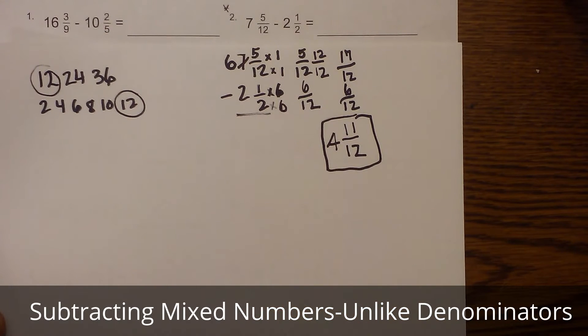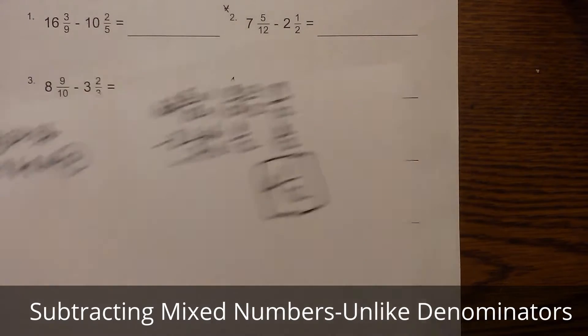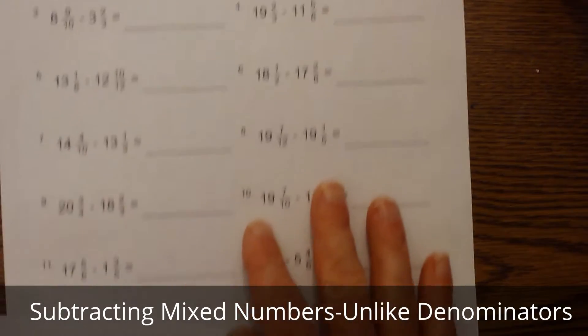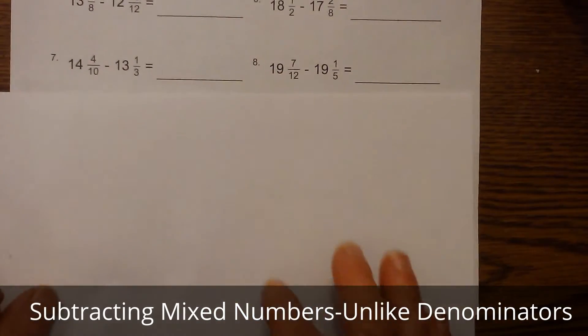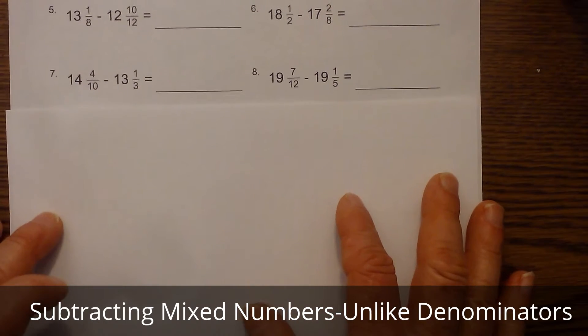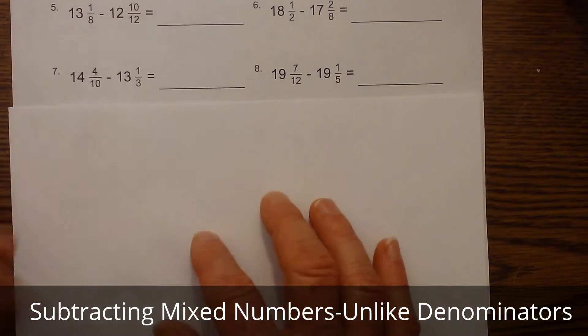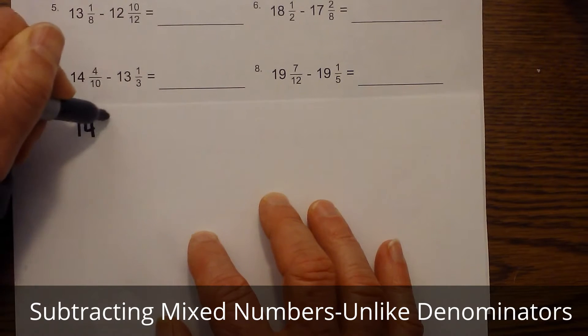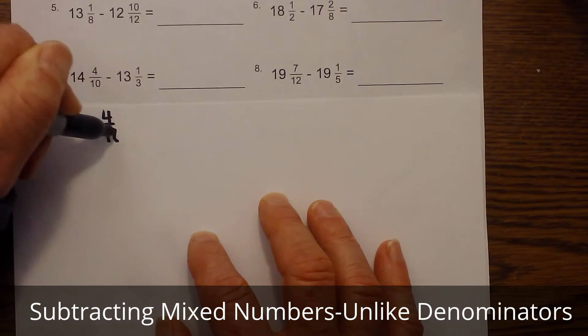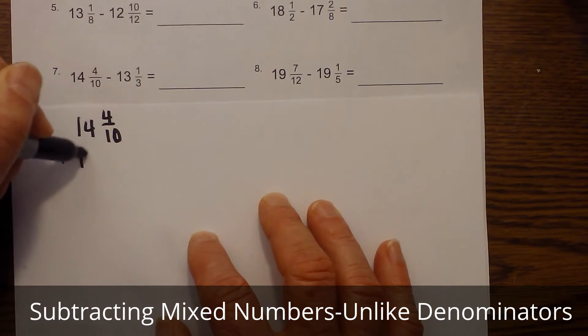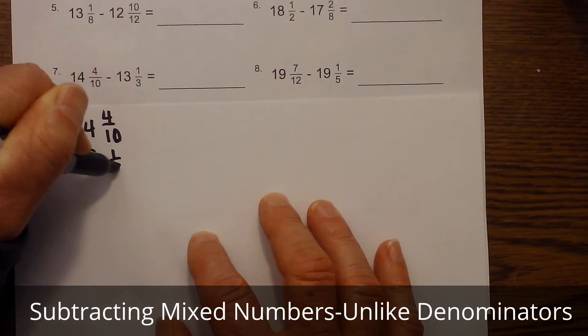Now let me do one that's a little bit different than that. Let me try number seven. Okay, I'm going to move this up and I chose seven just to show you something. I'm going to pick up the pace just a little bit. I'm going to rewrite it: fourteen and four tenths minus thirteen and one third.